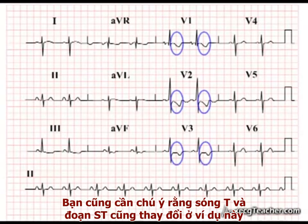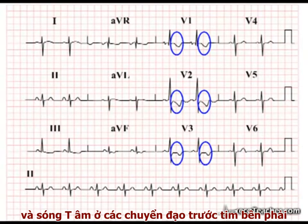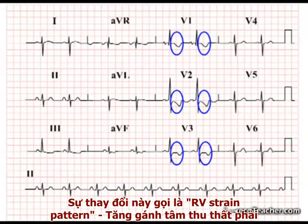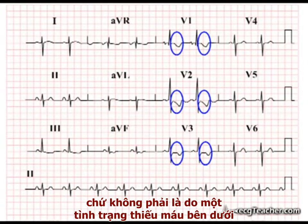You will also notice the T wave and ST segment changes present in this example. The ST segments are depressed below the isoelectric line, and the T waves are deeply inverted in the right precordial leads. These changes represent a right ventricular strain pattern secondary to hypertrophy and do not reflect any underlying acute ischemia.